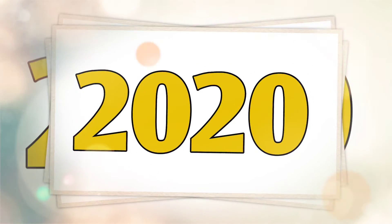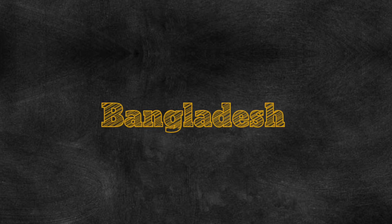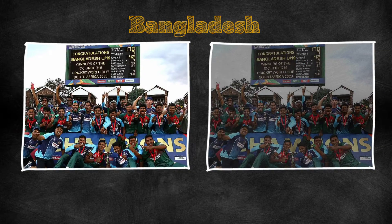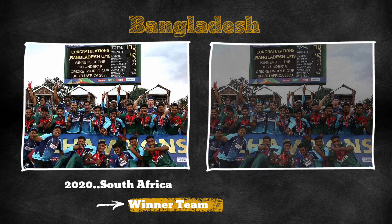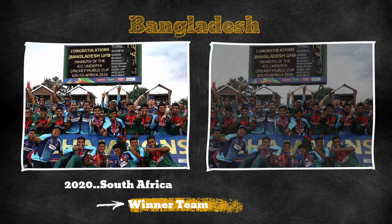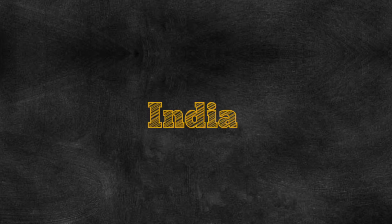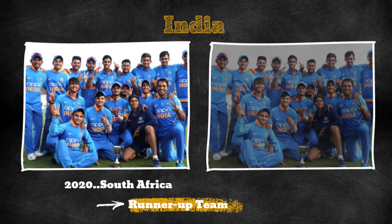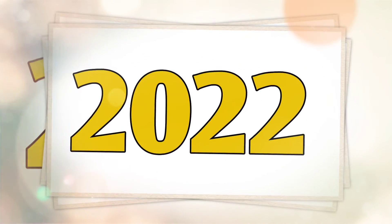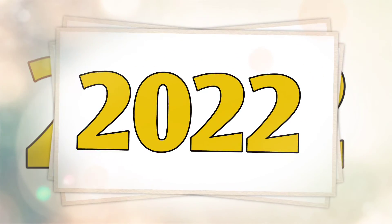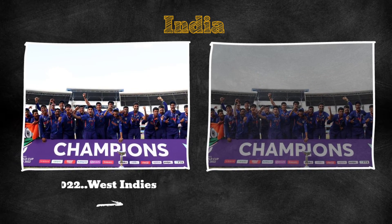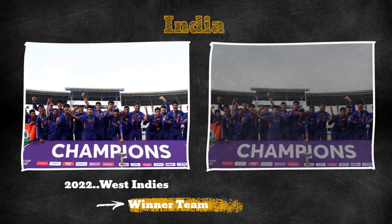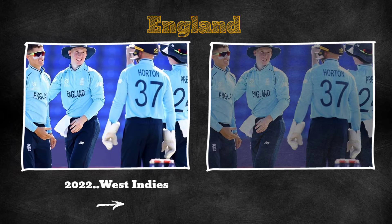Under-19 World Cup 2020 Winner Team: Australia. Runner-Up Team: England.